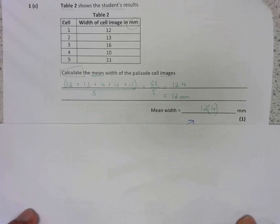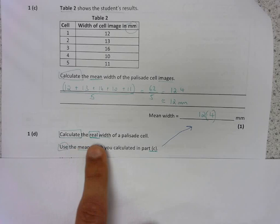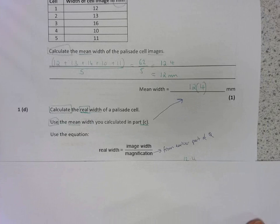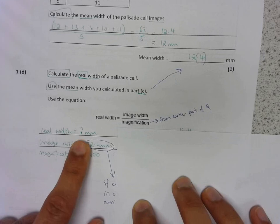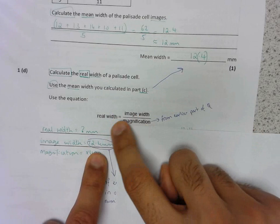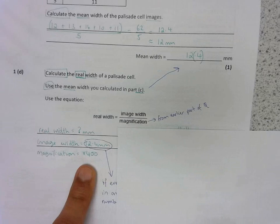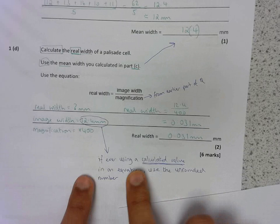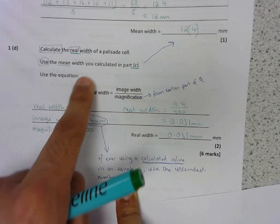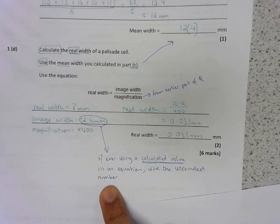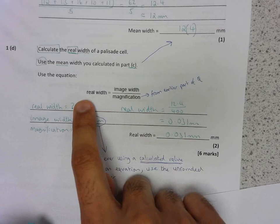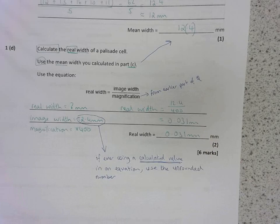In the next question, you were meant to use the mean we calculated to calculate the real width of a palisade cell using the equation given. Now, we know that the real width is what we are trying to find out, and we want to find that out in millimeters, because the image width we know is in millimeters as well. And this formula only works properly when the image and the real width are given to the same units. We know from the earlier part of the question that the magnification is 400. The reason I've used 12.4 here and not 12 is whenever you are using a calculated value, i.e. the mean, in an equation, then we should use the unrounded number because it will give us a more accurate final answer when we then round that, if need be. So then, I've got my formula, I need to substitute my numbers and get my answer 0.031 millimeters.